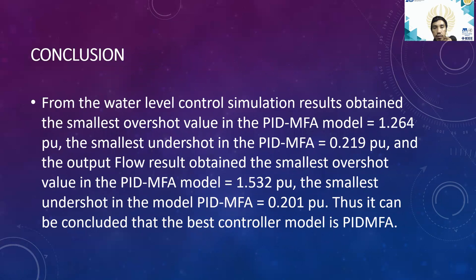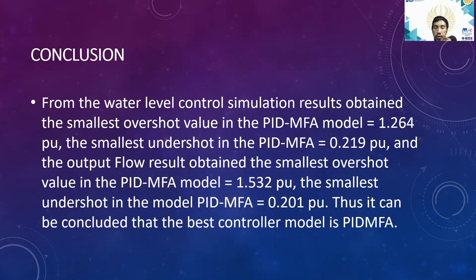For the conclusion, from the water level control simulation results, the small overshoot value in the PID modified firefly algorithm model is 1.274 per unit. The small undershoot in the PID modified firefly algorithm is about 0.219 per unit. The output flow results show the smallest overshoot value in the PID modified firefly algorithm model is about 1.522 per unit, and the smallest undershoot is about 0.201 per unit. Thus it can be concluded that the best control model is PID modified firefly algorithm.